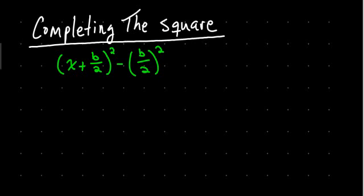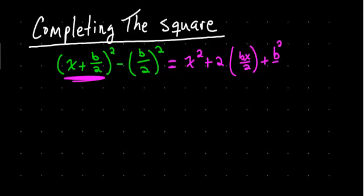So let's look at this expression we have here, and I want to expand it and simplify it and see what happens. When we expand this piece right here, when we expand an expression like that, we square the first term, get x squared, we multiply them together and double it, so we get plus 2 times bx over 2, and then square the last term, plus b squared over 4.